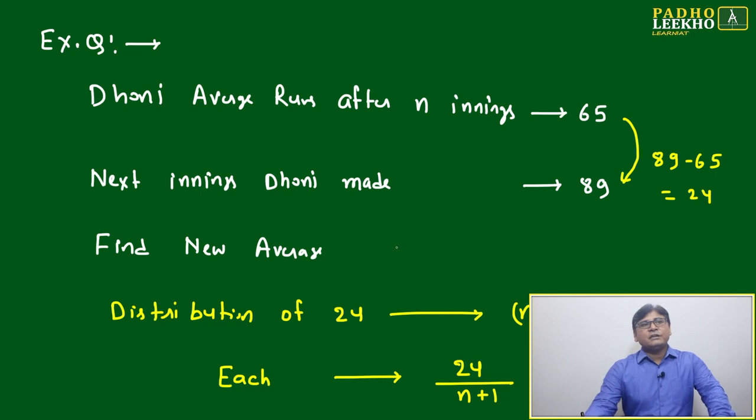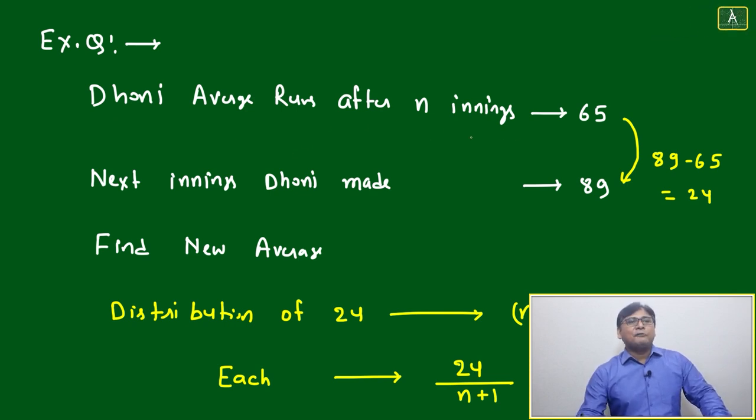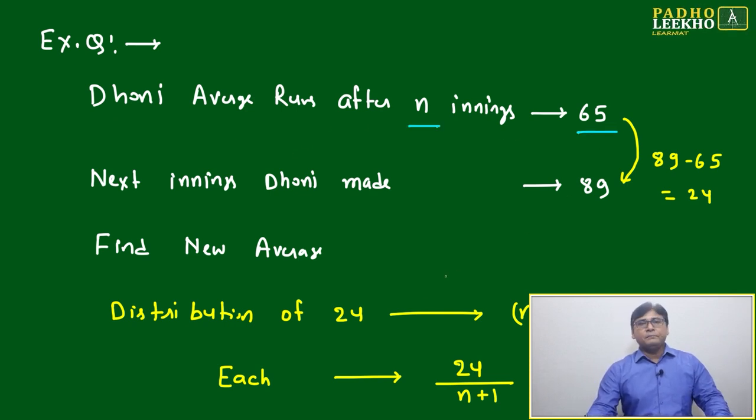Now we'll take one example question based on which we'll be able to make more clear how to deal with these types of situations. The situation given is: Dhoni's average runs after n innings is 65. Dhoni has played n innings, we don't know the value of n, n is a variable here, but his average after n innings is 65.